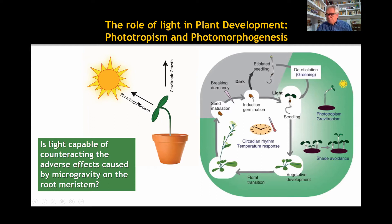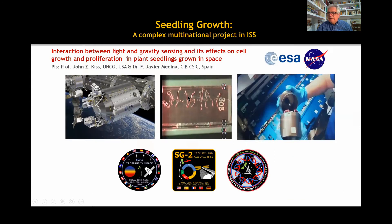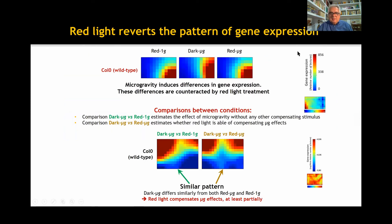Light is the factor responsible for phototropism, which together with gravitropism drives the growth of plants. At the same time, light influences many morphogenetic processes throughout the entire life of the plant, so that photomorphogenesis is a major developmental event. We have performed the seedling growth project in the International Space Station, studying the interaction between light and gravity sensing in spaceflight conditions and their combined influence on cell growth and proliferation in the root meristem. Among our results, we found that red light irradiation was capable of reverting the altered pattern of gene expression caused by microgravity in spaceflight.